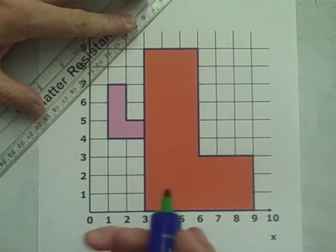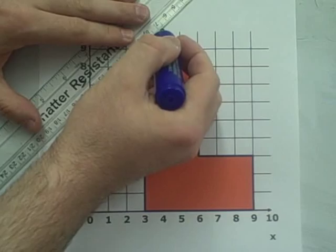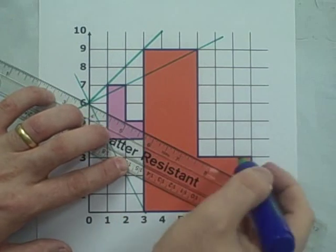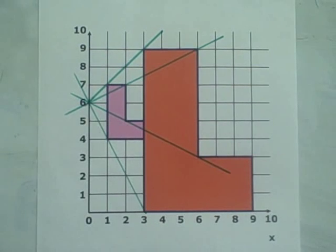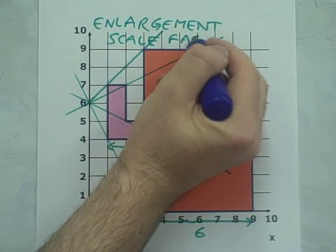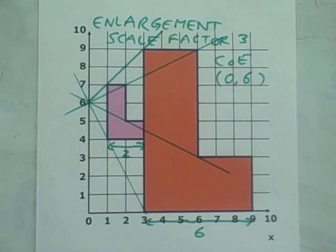This is an enlargement, probably the easiest to spot. Start by drawing in the guidelines between corresponding points on the object and the image. You need at least two guidelines, but the more you do, the more likely it is that you will get it right. Comparing the sides of the object and the image, the object has a base of 2 squares and the image a base of 6 squares, so the scale factor is 3. The centre of enlargement is at (0,6).